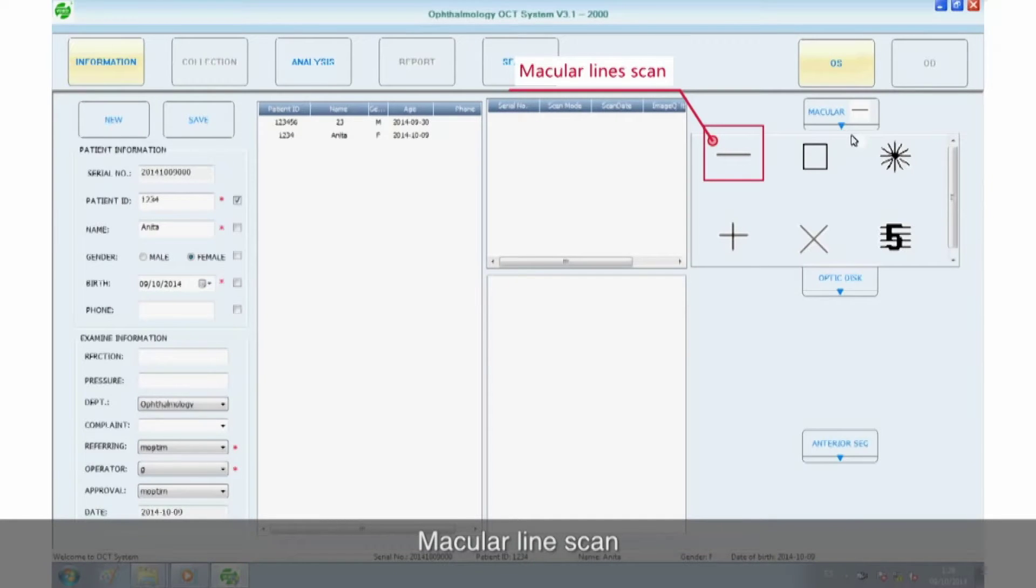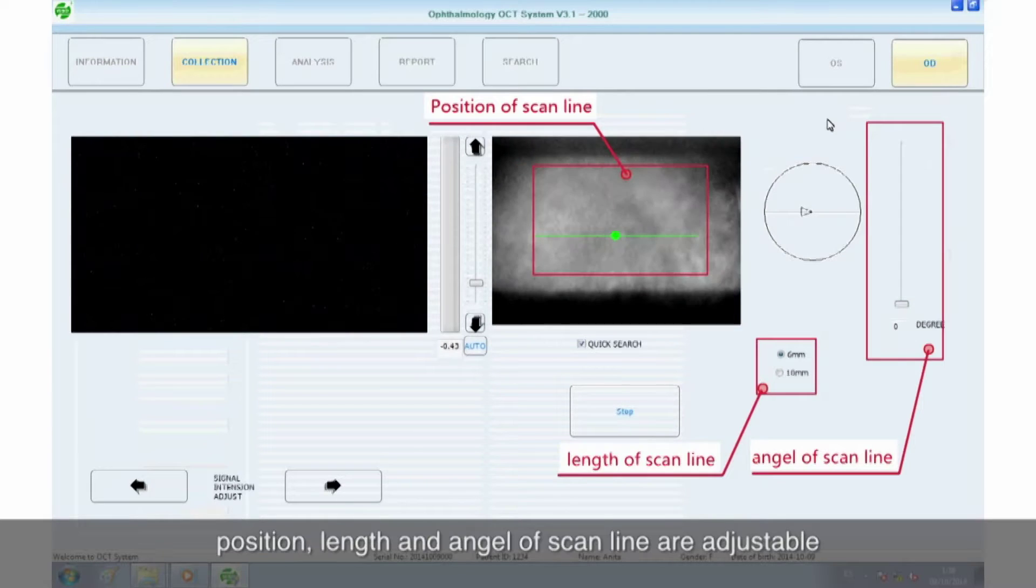Macular line scan. In this mode, position, length, and angle of scan line are adjustable.